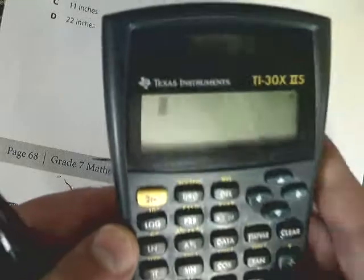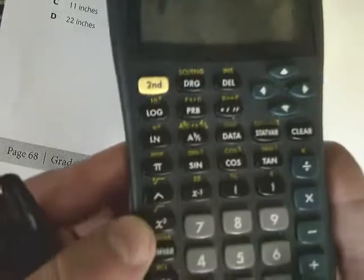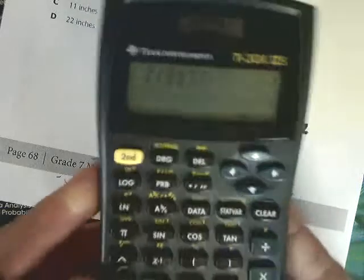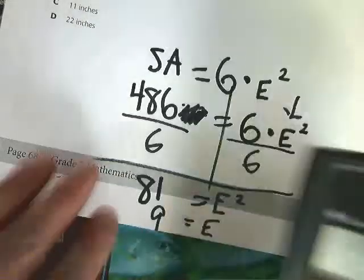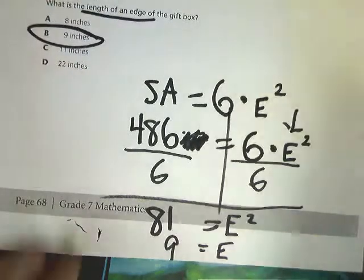In order to do that, in this calculator, you have the button right above square. So I'm going to type second and then hit the square button and it gives me the square root. Type 81 in and it gives me an answer of 9. So the length of an edge is just 9 inches.